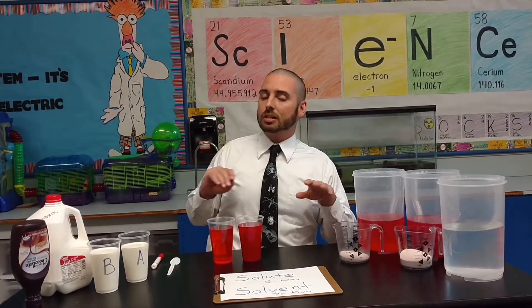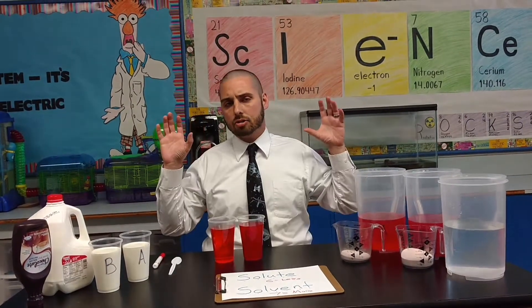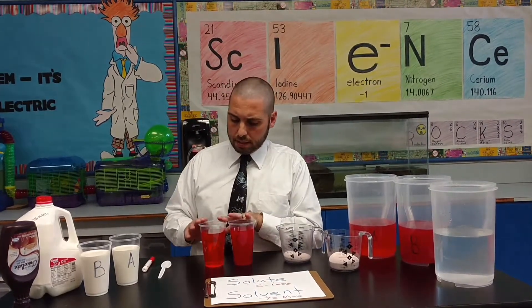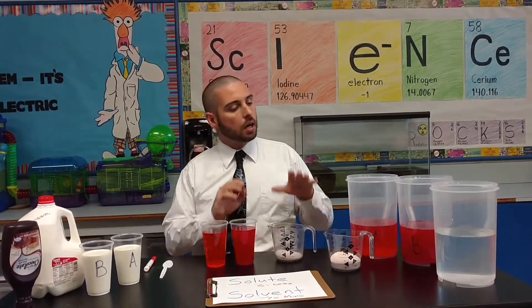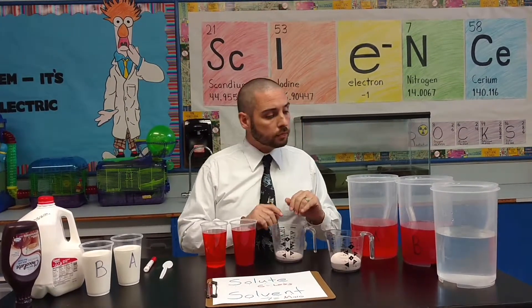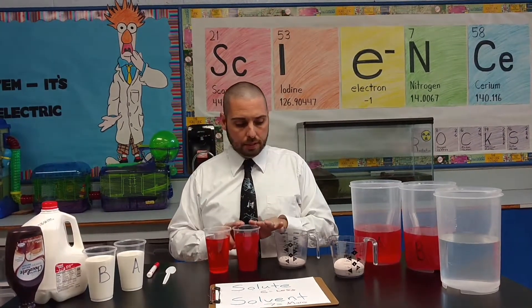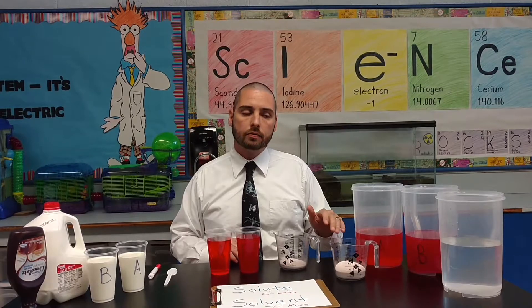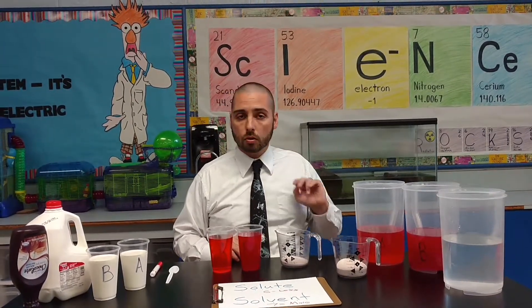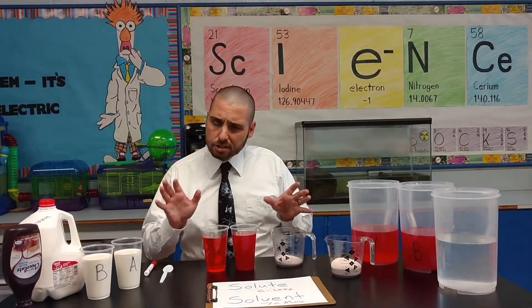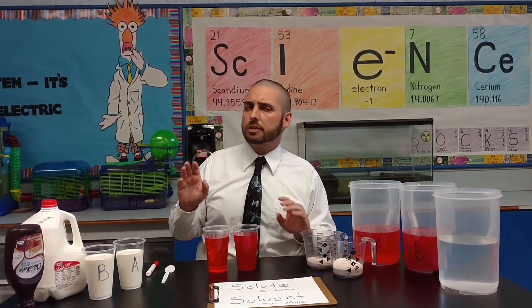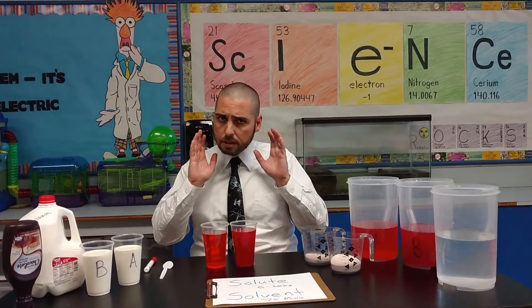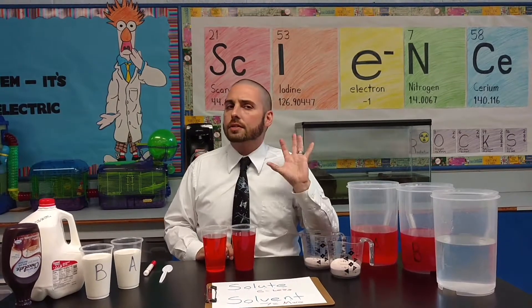Now we can take it up a notch and talk about concentration levels — a high concentration level and a low concentration level. I've got two cups here. Cup A had about a fourth of a cup of Kool-Aid powder mixed in with two quarts of water. Cup B had half a cup of Kool-Aid powder mixed in with those two quarts of water. I like to start by asking students to observe their Kool-Aid using three of their five senses.